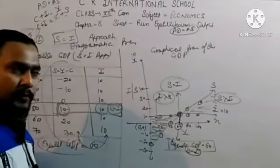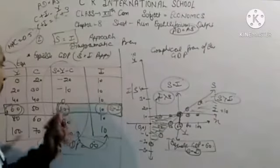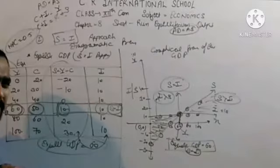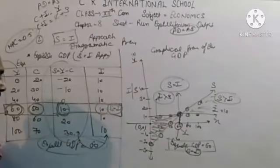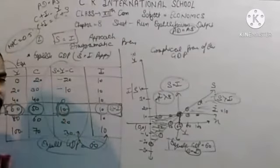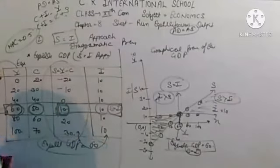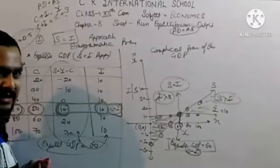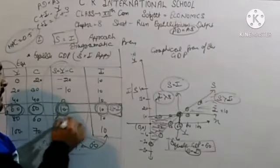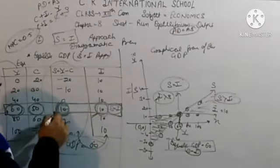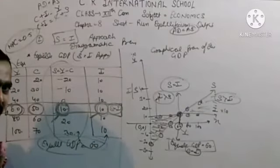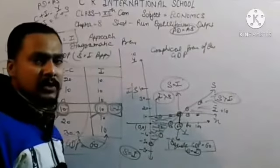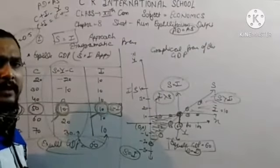At this equilibrium point, saving is 10 and investment is also 10. The whole income is not converted into consumption - people are saving a part of their income. The 10 units saved by the people are compensated by the 10 units invested by the producers or government. So saving made by the people is compensated by the investment, and thus S equals I, and equilibrium is achieved.